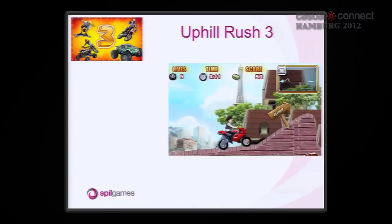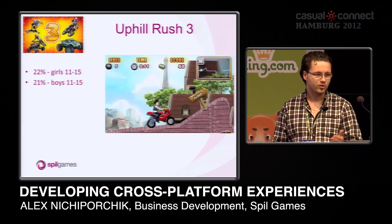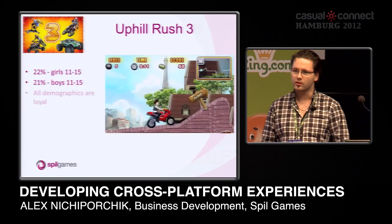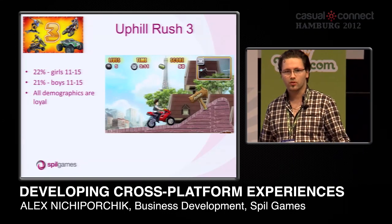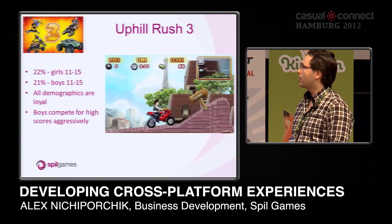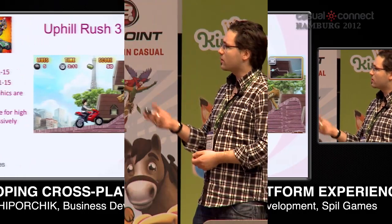We have Uphill Rush, a side-scrolling racing game where you do stunts. You would think it's a purely male teenage game, but really it's spread across girls and boys 11 to 15 fairly equally. All demographics are loyal — they come back very often. But the distinctive factor is that boys come back more often to compete for high scores in our leaderboards and social graphs.